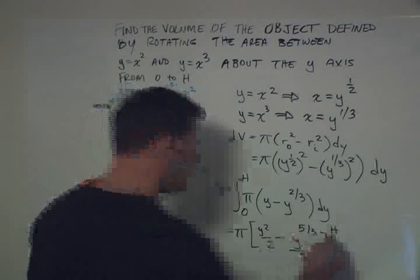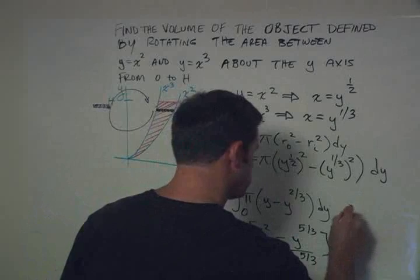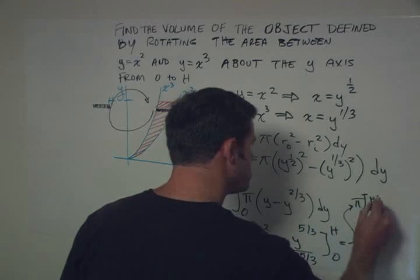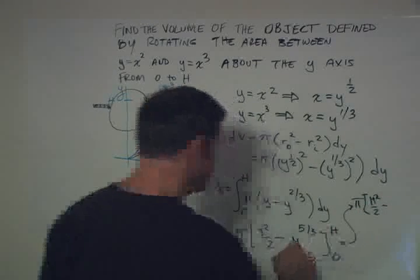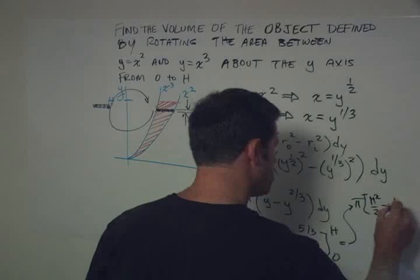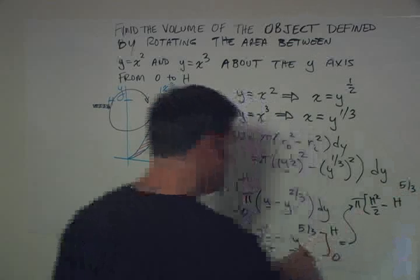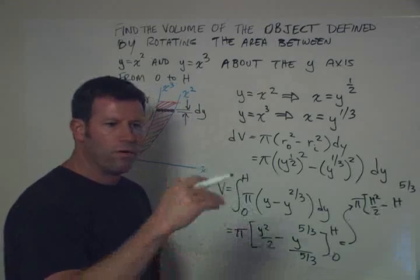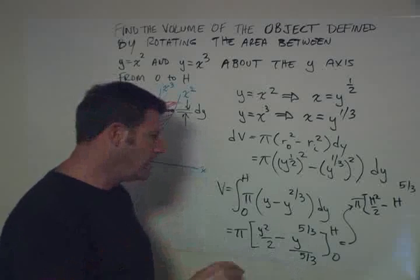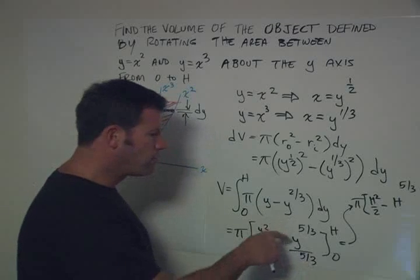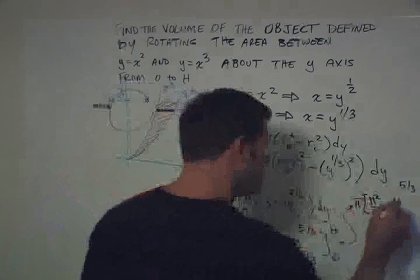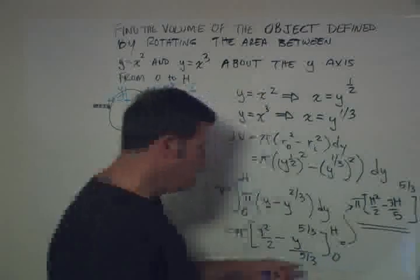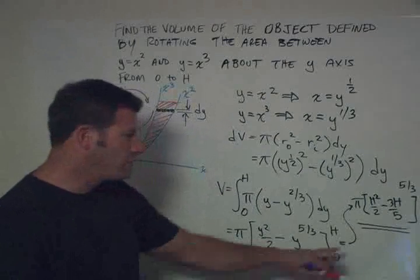And let's see if I can still fit it on here. So we have pi h squared over two minus h to the five-thirds. And now we have one over five-thirds. So we could do a over b over c over d is the same as a over b times d over c. We have one over one over five over three. So that's one over one times three over five. So this is going to be three-fifths. And the zero terms make no contribution. So that is our final answer.